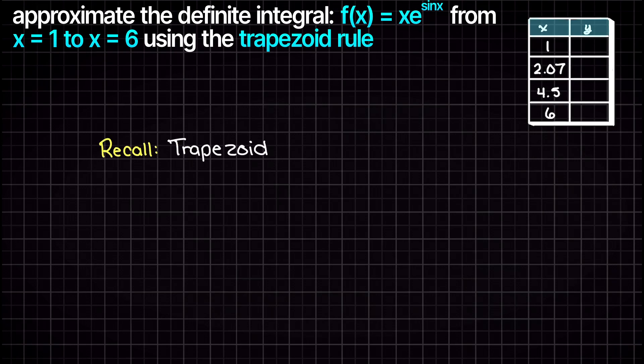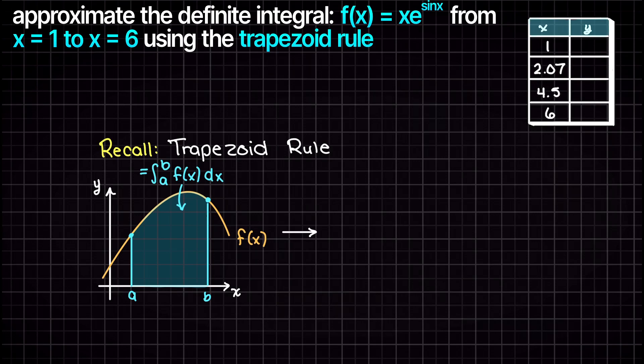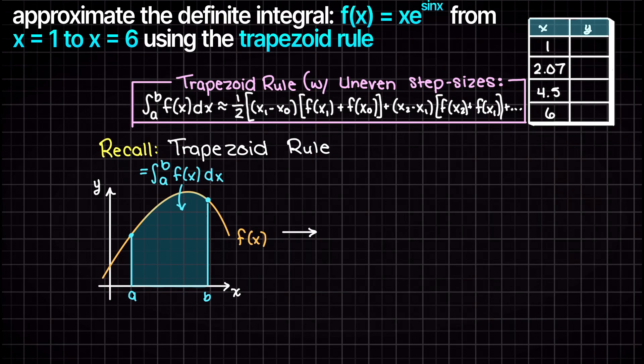Before we get into the problem further let's just recall what the trapezoid rule is. This technique is one of several numerical methods used to approximate definite integrals that are difficult or impossible to solve analytically. As we learned in the last video, our trapezoid rule with unequal step sizes is represented as this general equation here.